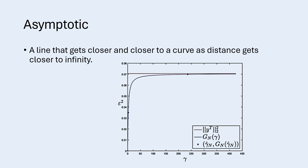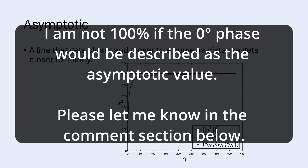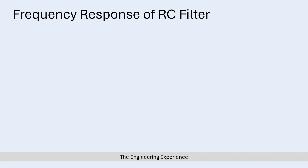The phase response for an RC filter for DC signals is 0 degrees phase. As the frequency goes towards infinity, the phase response gets closer and closer to 90 degrees. So those are the two asymptotic values for this equation that we need to show. Let's first look at how to derive the frequency response and phase response of an RC filter.